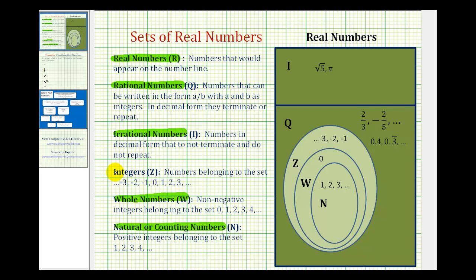The integers, identified by capital Z, are the numbers that belong to this set here. Notice how it includes the negative natural numbers, zero, and the natural numbers. Looking at our Venn diagram, here's Z — here are the negative natural numbers, zero, and the natural numbers. All of these are included in the set of integers.